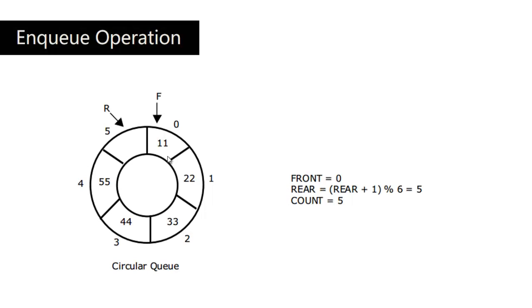When we insert 22, 33, 44, and 55, the status will be as follows. Rear is now pointing to the 5th location and count is 5 because we have inserted 5 elements total. The front end is still pointing to the first location and the rear pointer is pointing to the last location, which is the 5th index. We still have one place empty.